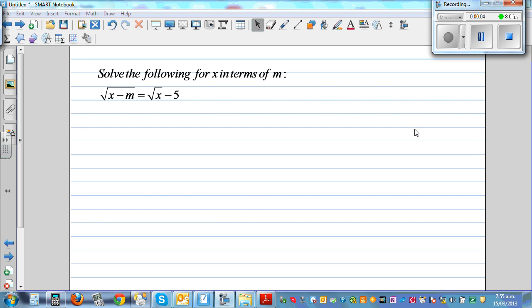Solve the following for x in terms of m: √(x-m) = √x - 5. Now this is a question where students struggle to do it correctly, though it is simple.